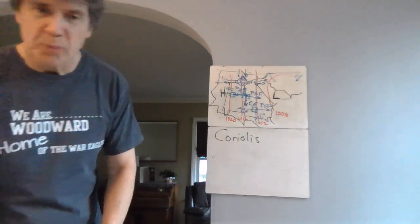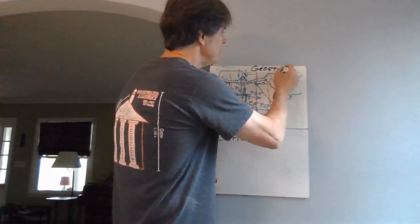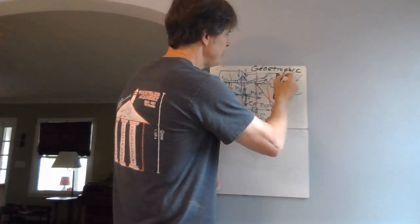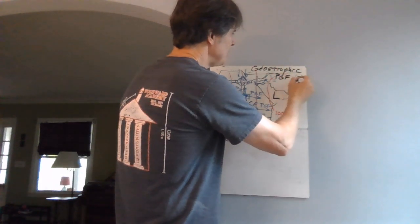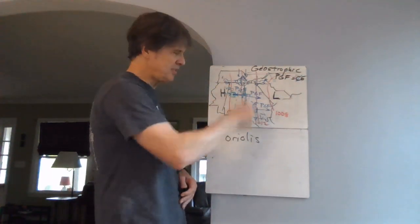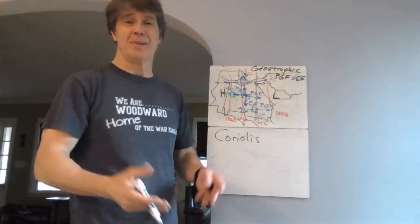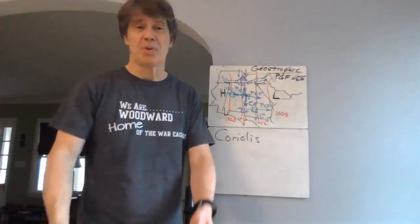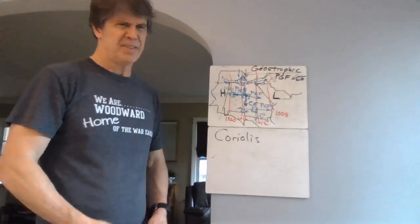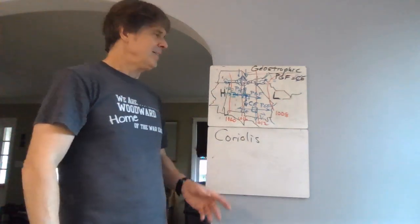The geostrophic wind is what happens when the pressure gradient force and the Coriolis effect balance each other. The air doesn't stop — it keeps moving. Newton's first law: the sum of the forces is zero, so it keeps doing what it's doing. But it doesn't stop there — there's another force.